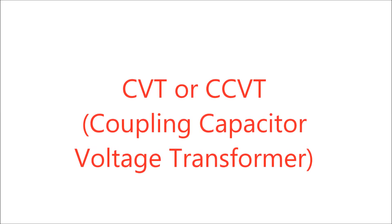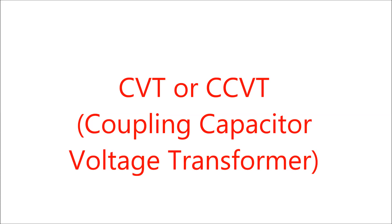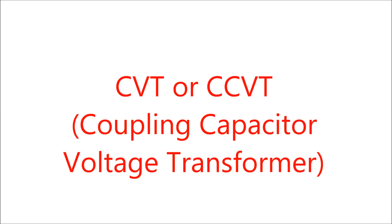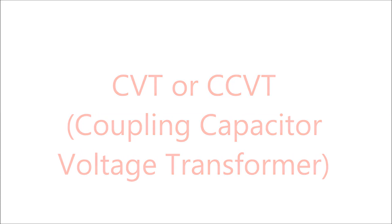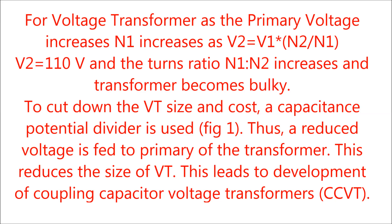CVT, or practically called CCVT (Coupling Capacitor Voltage Transformer), has a secondary voltage of 110 volts for VT. If we increase the primary voltage beyond 132 kV, we have to increase the number of turns N1 by N2, which will make the transformer more bulky and less cost-effective.